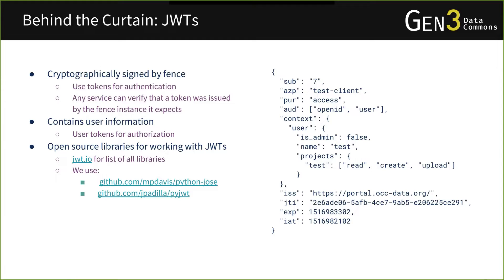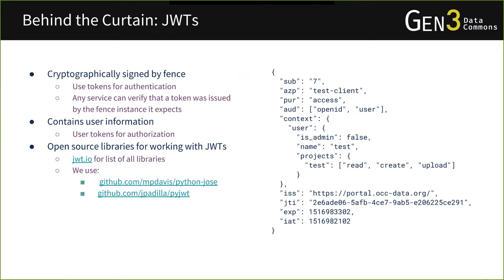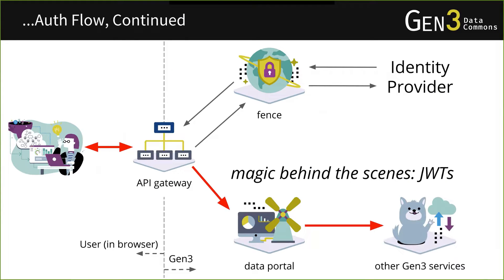There are a wide variety of open source libraries for working with JWTs — it is an established standard across the web. You can visit jwt.io to see a comprehensive list of libraries. For example, we use Python JOSE and PyJWT for creating and validating these tokens. Once a user is logged in and Fence has issued them a token, that token is stored in the user's browser, and they're free to access our services through the data portal.